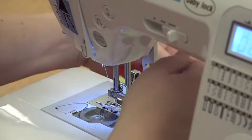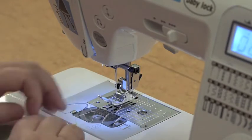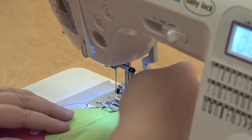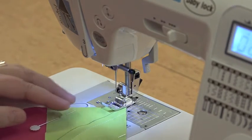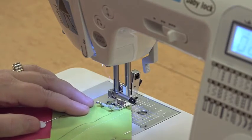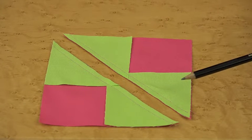So we've sewn down one side, we're just going to turn it around and go right back the other way on the other side of the line. Now you have sewn a quarter of an inch on each side of the line.